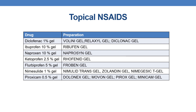Now coming to topical NSAIDs: diclofenac 1% gel preparations include Voline gel, Relaxide gel, and Diclofenac gel. Ibuprofen 10% gel marketed preparation is Ribofen gel. Naproxen 10% gel preparation is Naproxen gel. Ketoprofen 2.5% gel marketed preparation is Profenate gel. Flurbiprofen 5% gel marketed preparation is Froben gel. Nimesulide 1% gel marketed preparations are Nimulat Trans gel, Zolandin gel, and Nimegesic T gel. Finally, piroxicam 0.5% gel marketed preparations are Dolonex gel, Move On gel, Pyrox gel, and Minican gel.